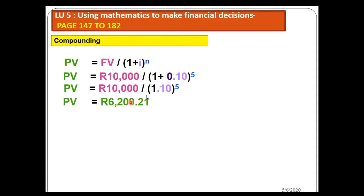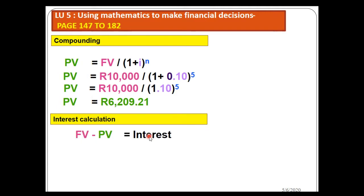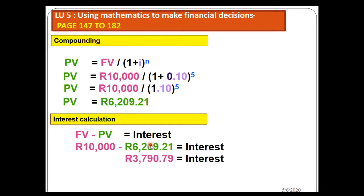Dividing by one plus 0.10 to the power of 5, the answer is 6,209.21. The present value is less than the future value because the present value does not include interest. I can also calculate the interest: future value less present value gives interest of 3,790.79. The key is to use the correct formula — you determine which formula to use by identifying whether the present value or future value has been given in the question.